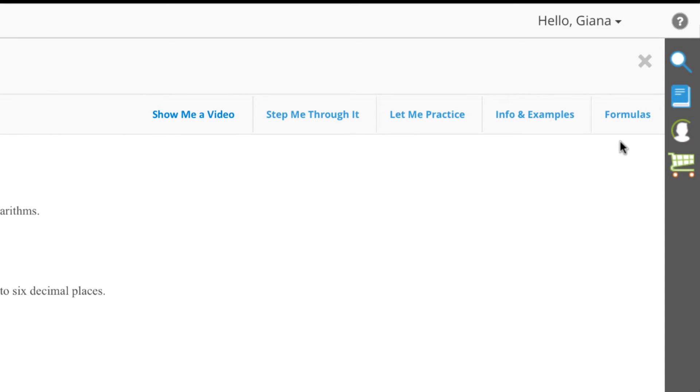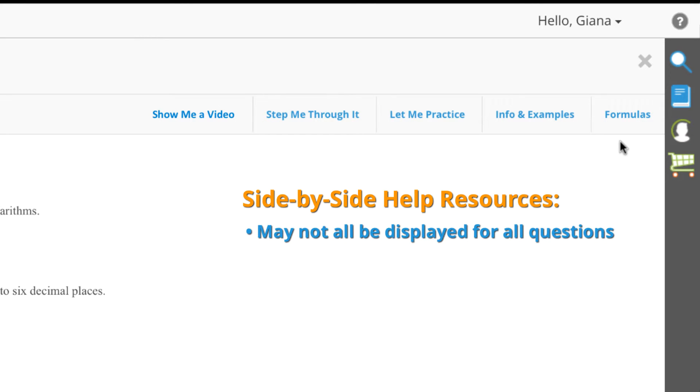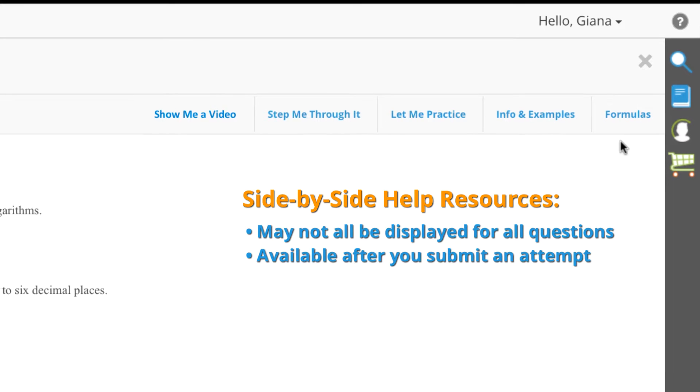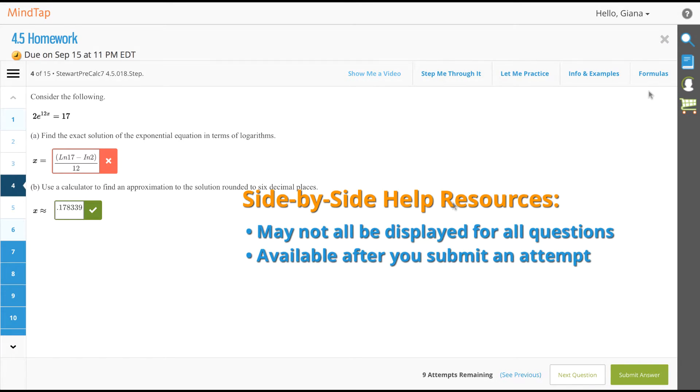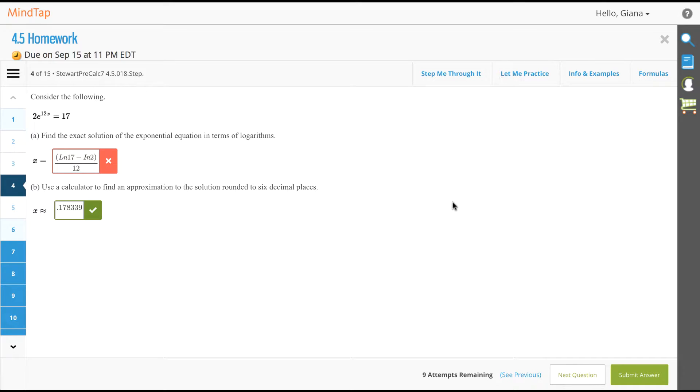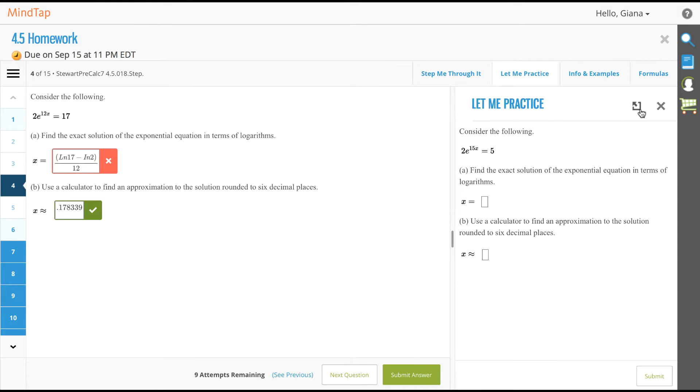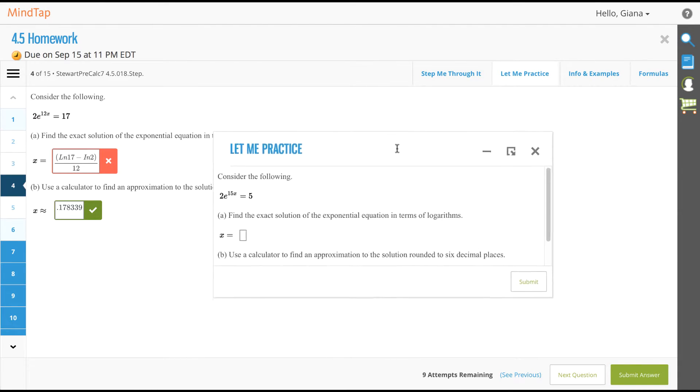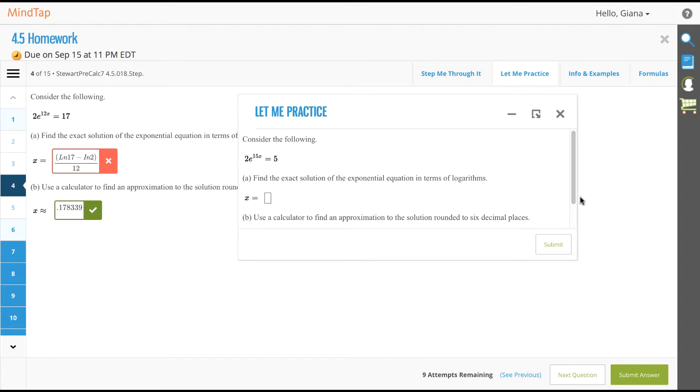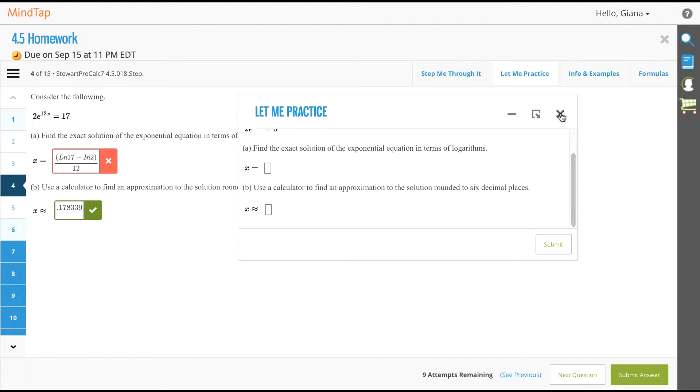Depending on the settings determined by your instructor, these may not all be displayed for all questions. Sometimes the resources are only available after you submit an attempt for a question. Click on any of the side-by-side help tabs to expand the resources alongside the question. You never have to open a new tab or new window. However, you have the option to move the resource around on the screen.